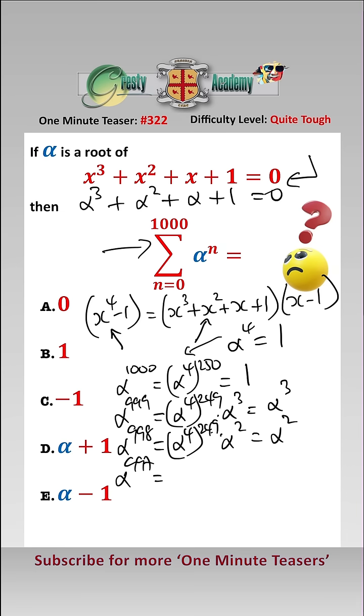Alpha to the 997 is equal to alpha to the four to the 249 times alpha, which equals alpha. Now we know that one plus alpha plus alpha squared plus alpha cubed is zero. Therefore, alpha to the thousand plus alpha to the 999 plus alpha to the 998 plus alpha to the 997 is also zero.